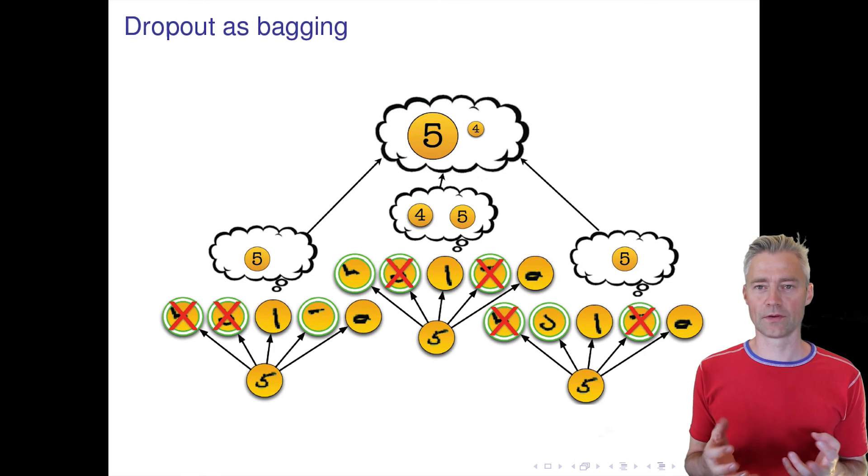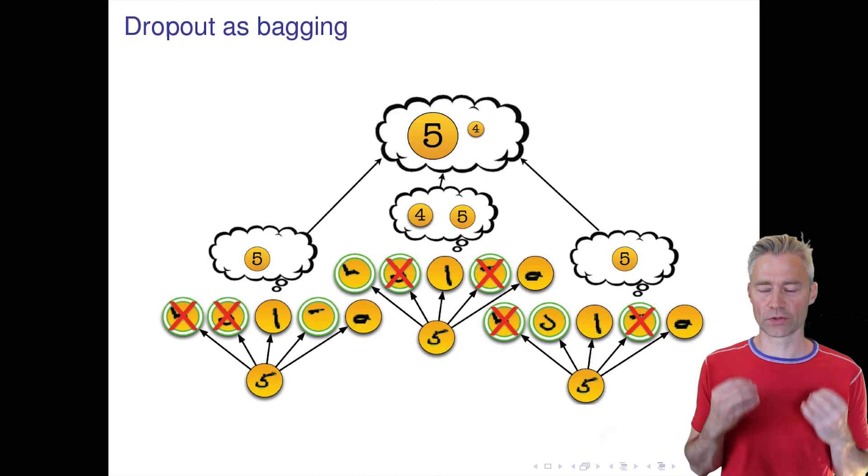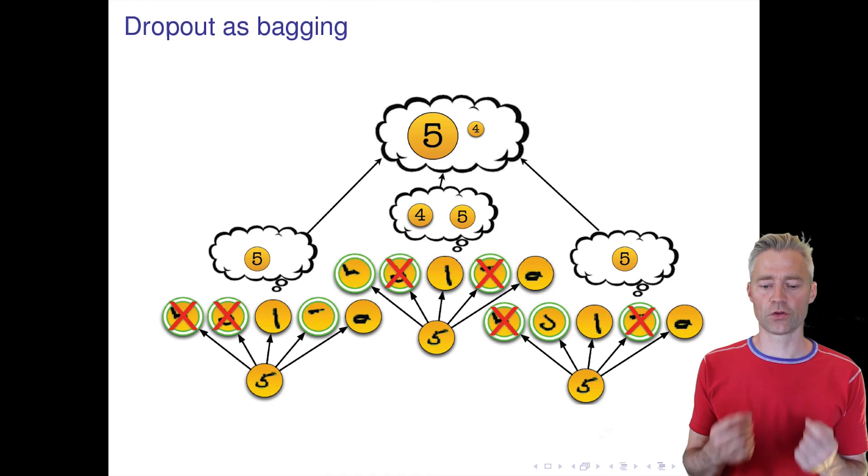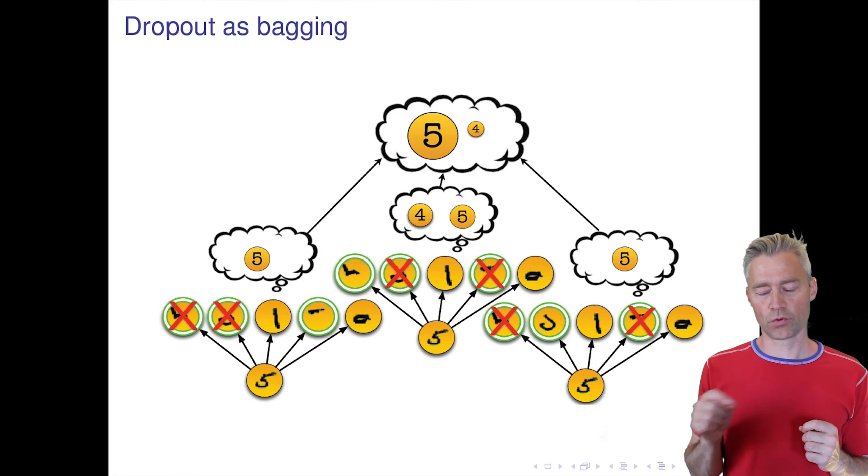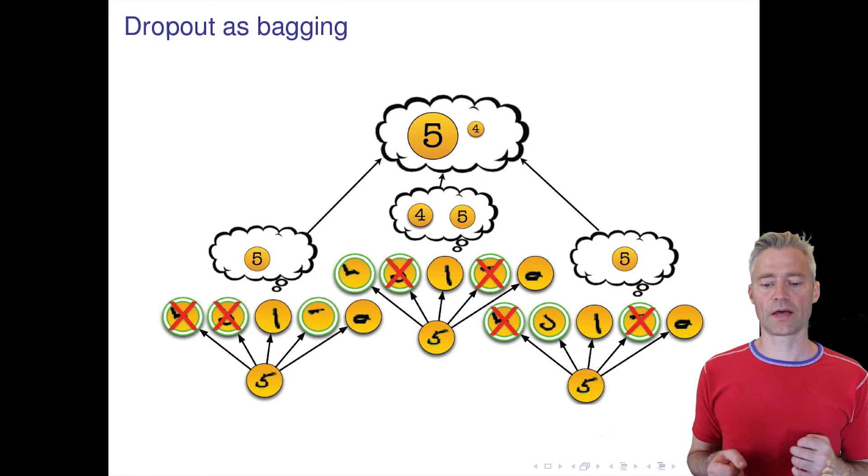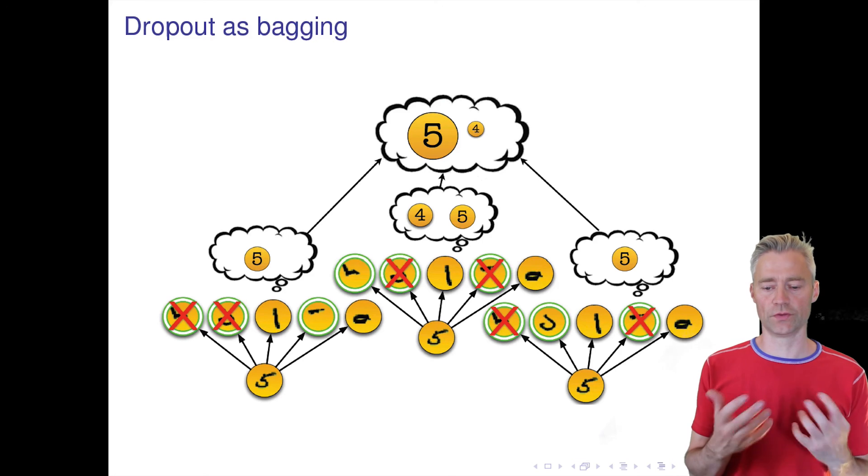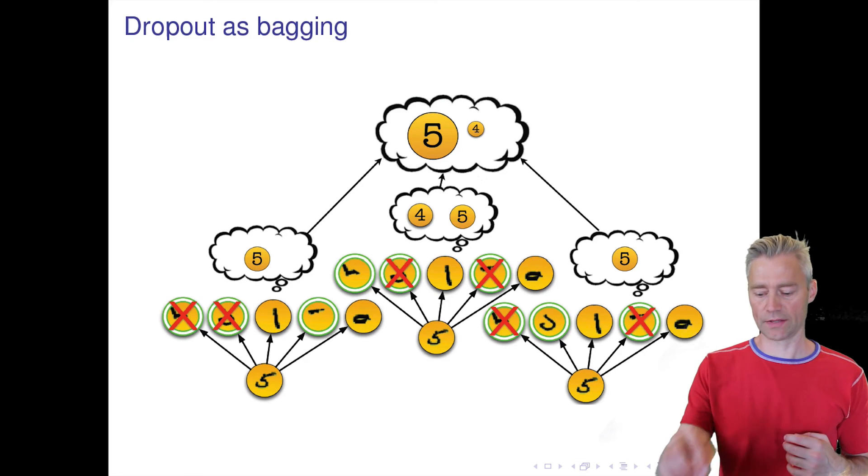I just told you that we actually don't do this kind of drawing a bagging in the end. Probably we could do it and we could get slightly better performance, but this other heuristic of dividing all the weights by two at test time is much faster, so we apply that.